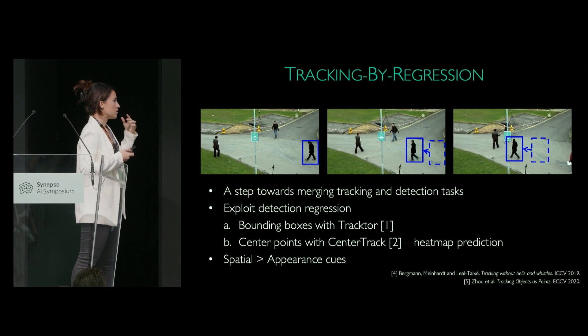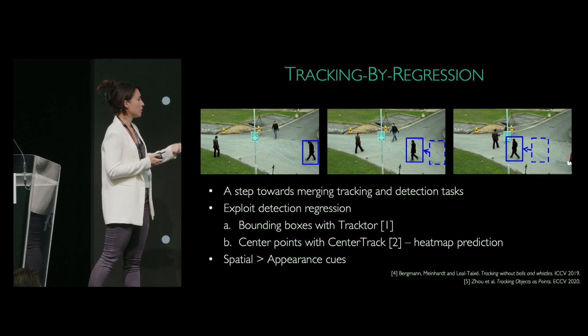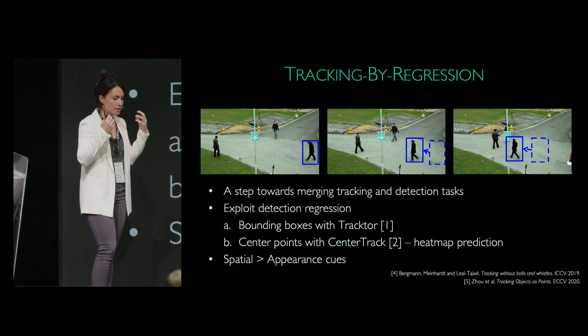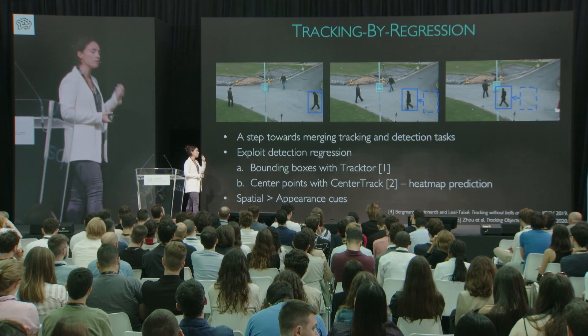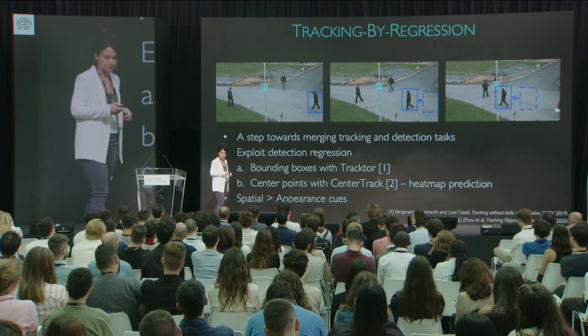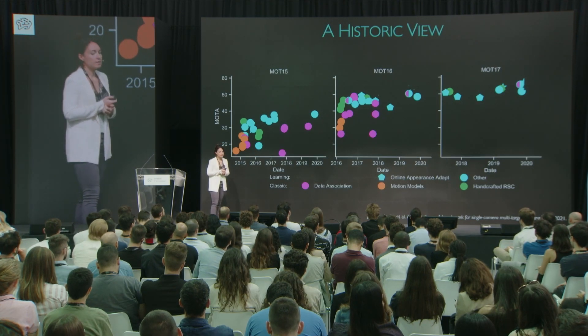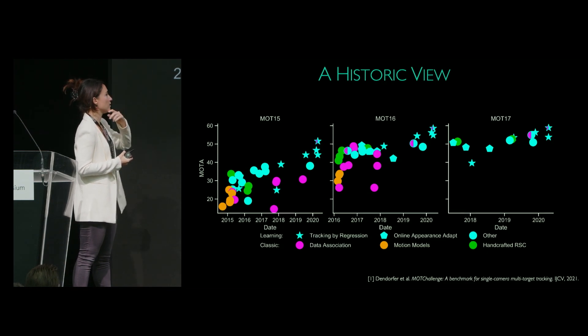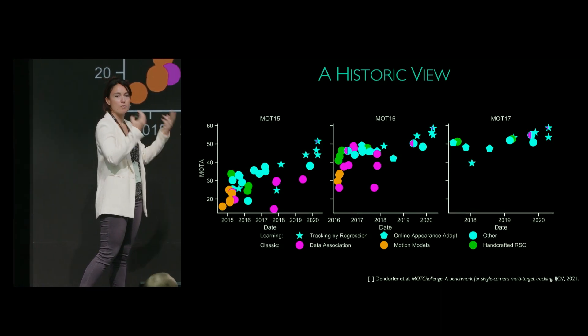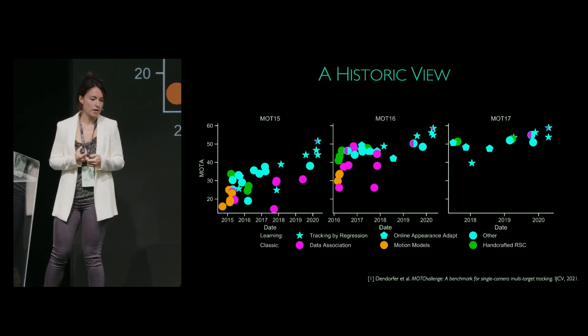Nonetheless, tracking by regression made a big splash in the community. We had bounding box regression with Tractor, center point regression with CenterTrack. The idea here was that spatial cues took over appearance cues — we didn't have a notion of identity or any appearance model, and spatial information was kind of all you needed. In the historic view, tracking by regression methods appear as these stars, and you can see how they really pushed accuracy and how many methods followed up and built on top of them. It was a real step towards unifying detection and tracking, but in practice we still needed re-identification methods or motion models on top for the really hard tracking problems.